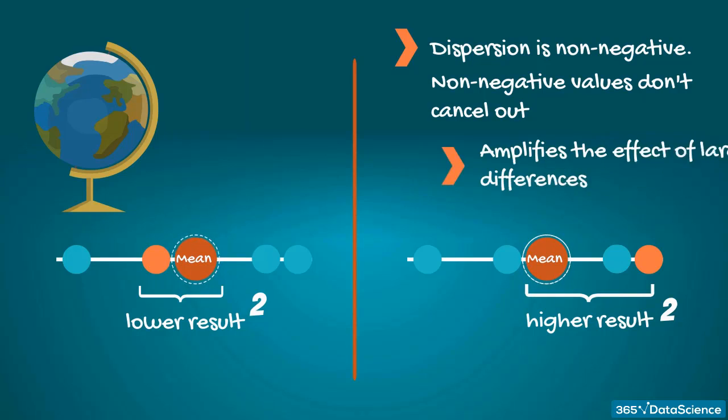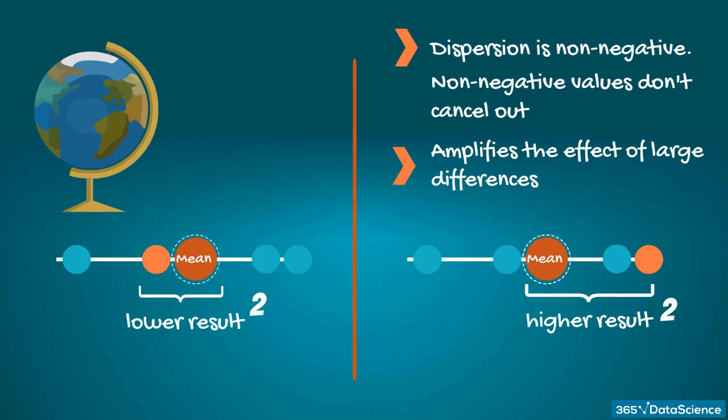Second, squaring amplifies the effect of large differences. For example, if the mean is zero and you have an observation of 100, the squared spread is 10,000.